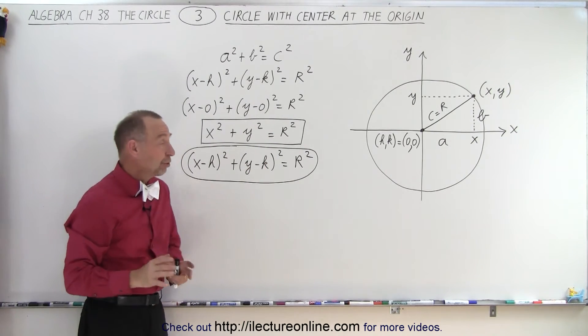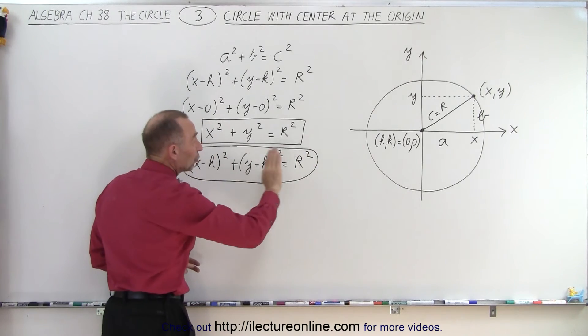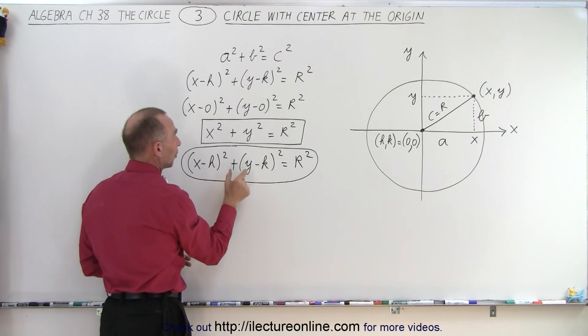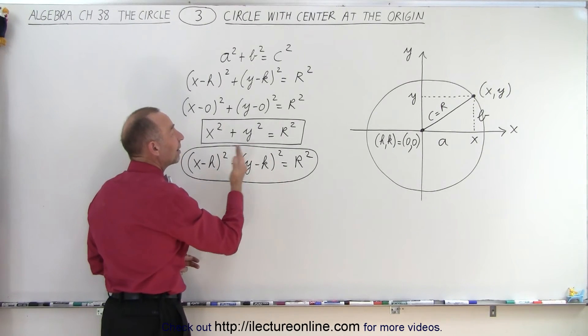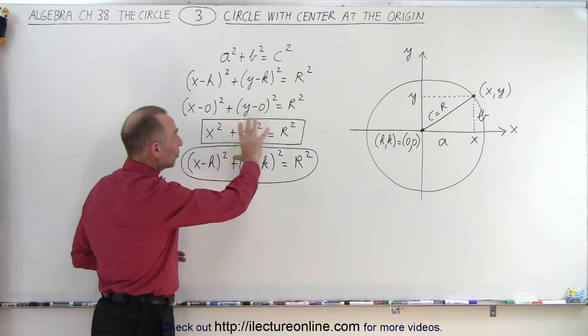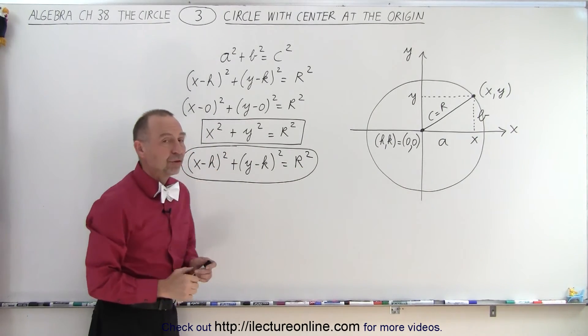Now typically in most algebra books they like to write the r squared on the right side of the equal sign and x squared plus y squared, or x minus h squared plus y minus k squared, on the left side. It doesn't really matter, you can flip the equation around either way.